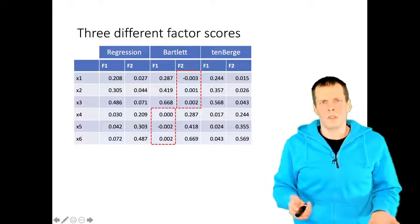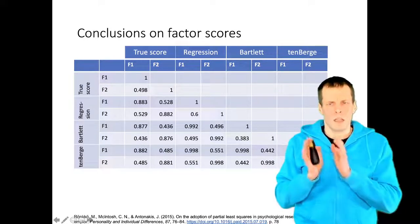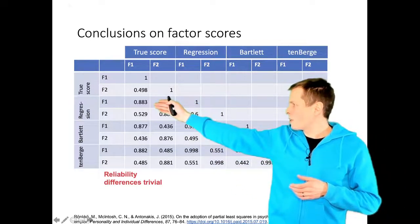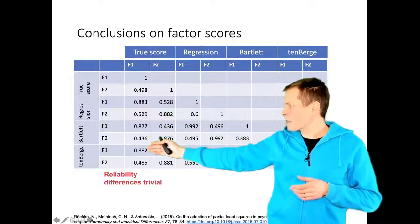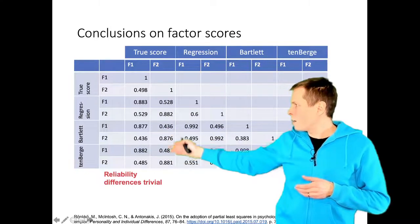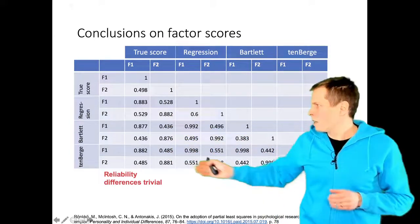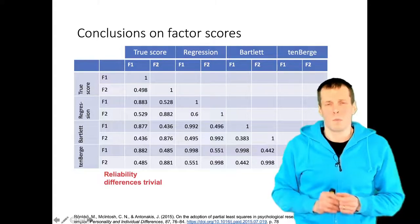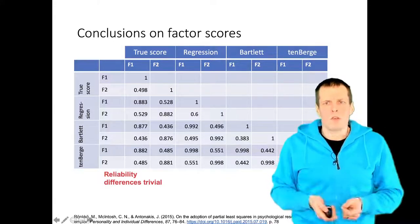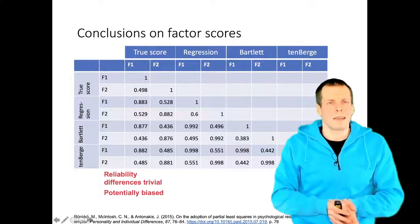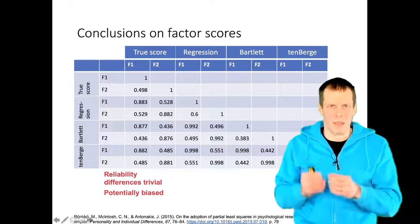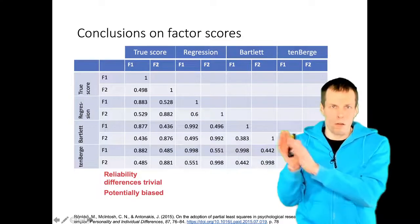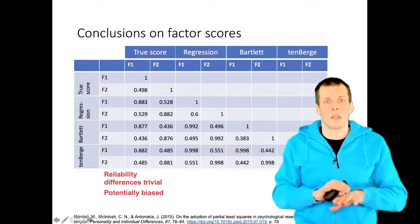Should we use factor scores at all? The reliability differences are pretty trivial. Regression scores have a reliability of 0.883, Thinberg scores 0.882, and Bartlett scores 0.881 — the difference is in the third decimal place. Factor scores are also potentially biased, particularly regression scores. As a conclusion, it's probably always best to simply take a sum of those indicators that measure one thing and a sum of those that measure another, instead of using factor scores that combine all indicators.